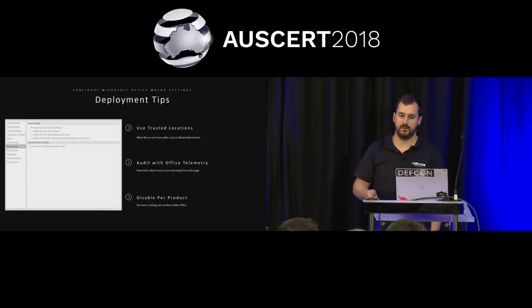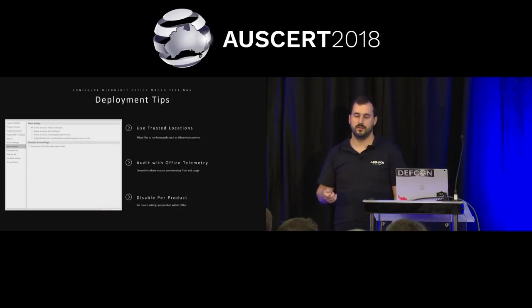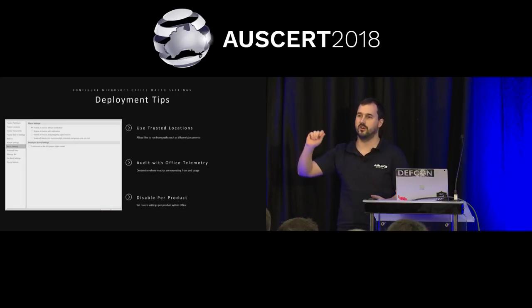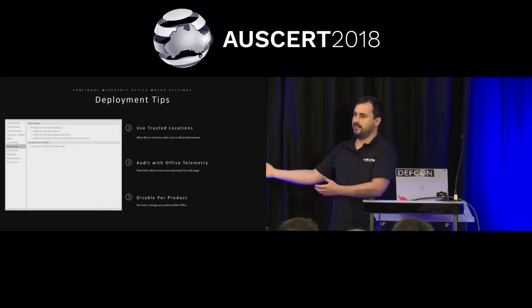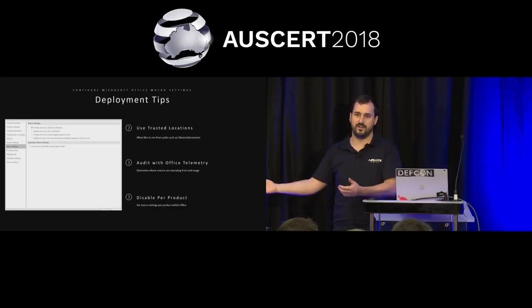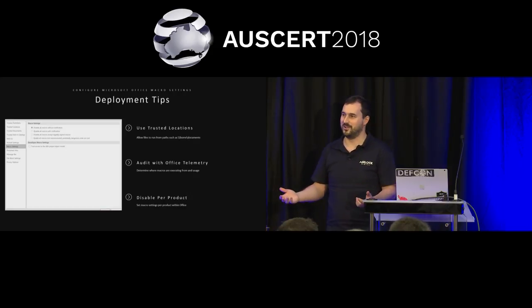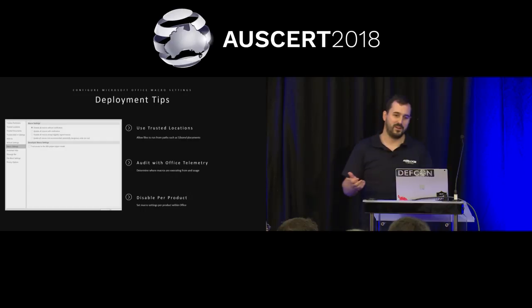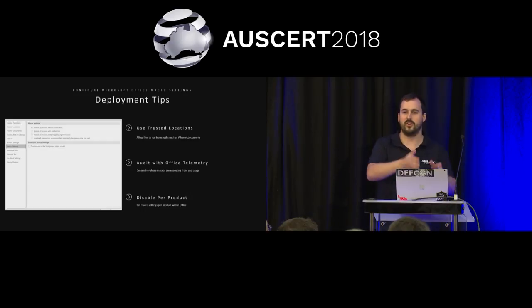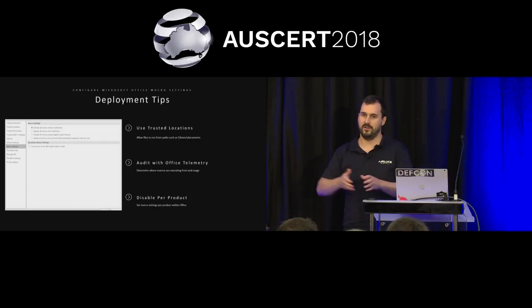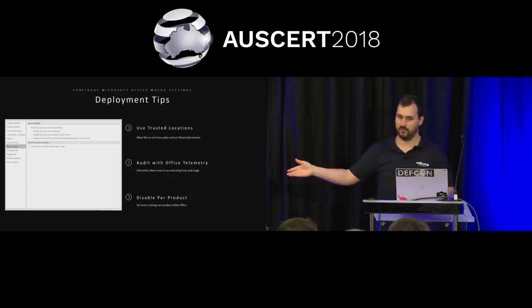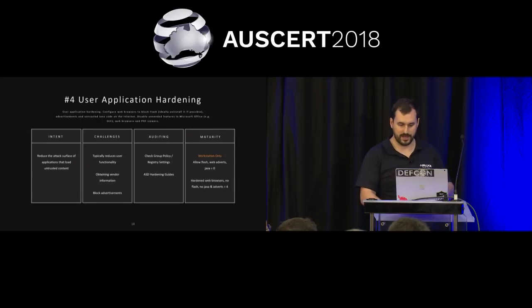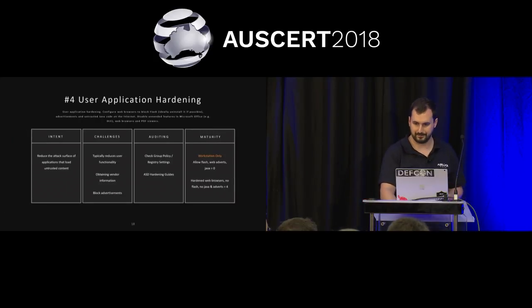Remember to disable macros per product. Macro settings aren't something you just turn off for Office globally — Microsoft Access, for some reason, has macro settings. It's important to go through the whole suite, even Visio and everything, and make sure you've got all those settings turned off across the board. The auditing script will really help you with that.